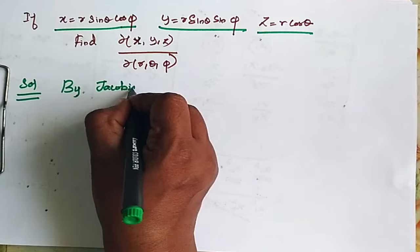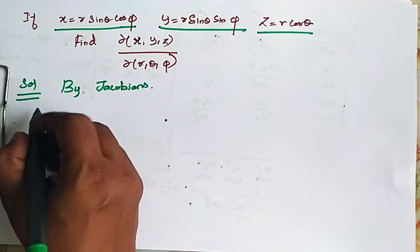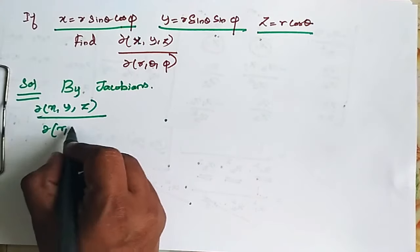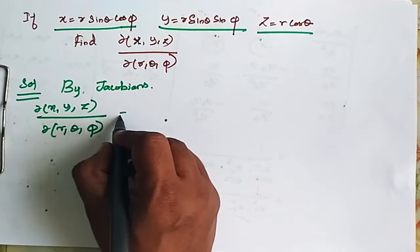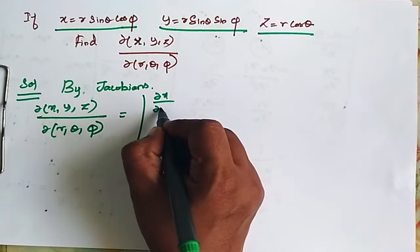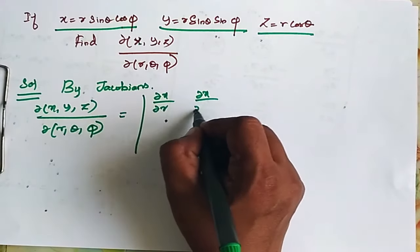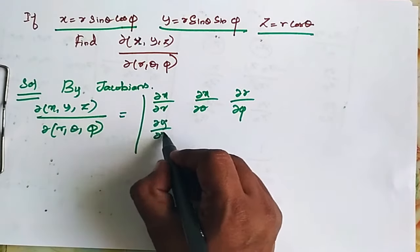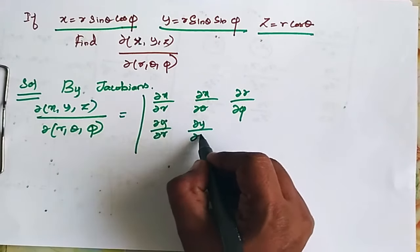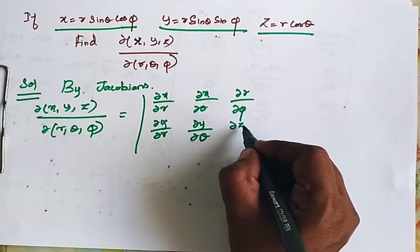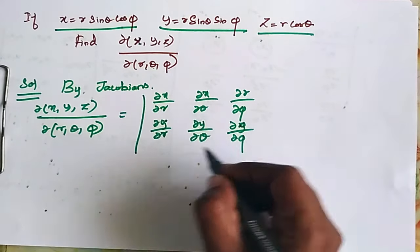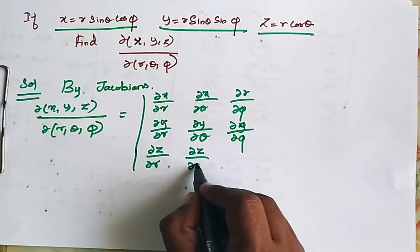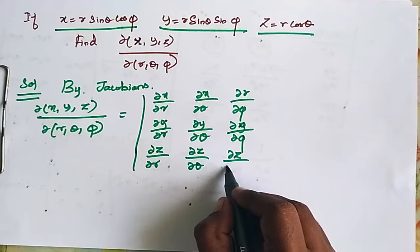by Jacobians we know that ∂(x, y, z) / ∂(r, θ, φ) is equal to the determinant with entries: ∂x/∂r, ∂x/∂θ, ∂x/∂φ; then ∂y/∂r, ∂y/∂θ, ∂y/∂φ; next ∂z/∂r, ∂z/∂θ, ∂z/∂φ.